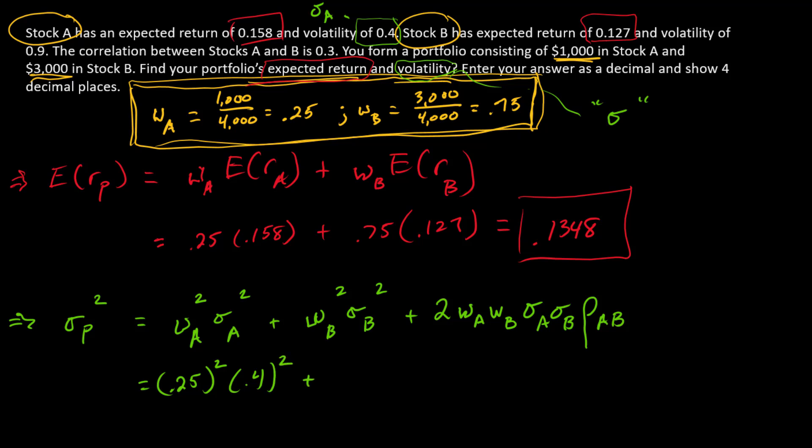Same thing for B. So the weight of B is 0.75. That needs to be squared. The variance of B. We have the volatility. There's sigma B is 0.9. Since we want a variance, that's going to be squared.